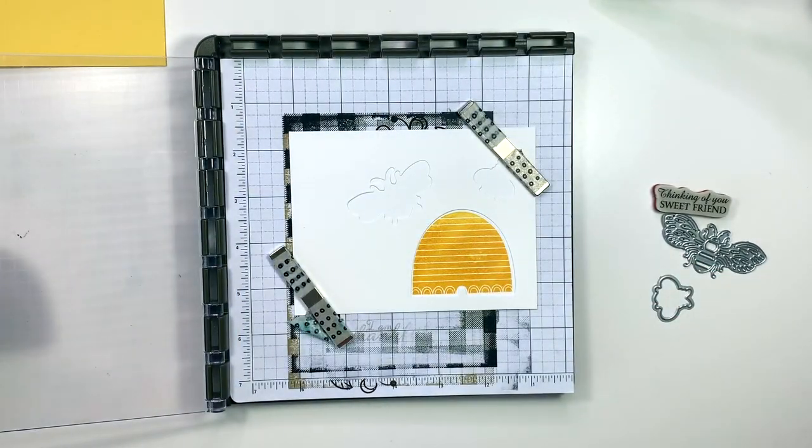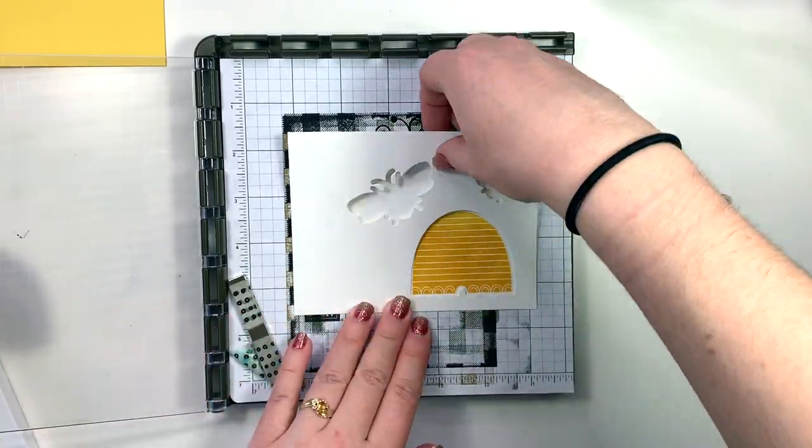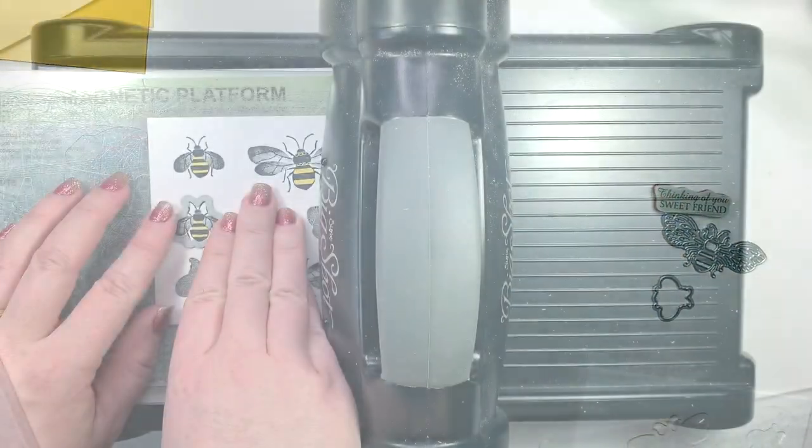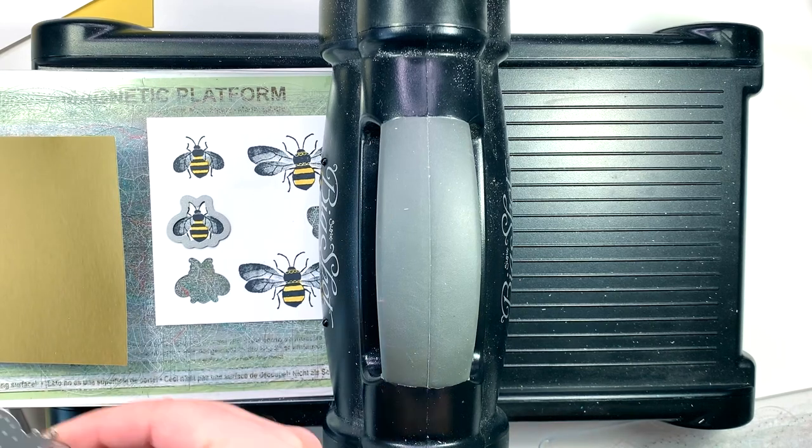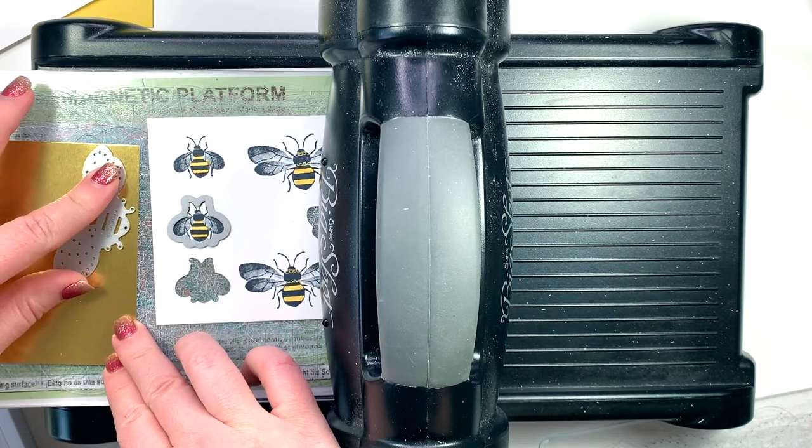So I decided to employ the same technique I used on a previous card, using the stamparatus to stamp in that negative space on a card mat in the background.